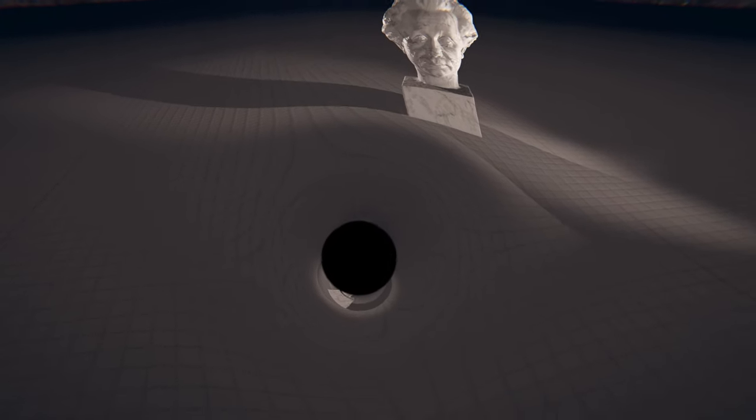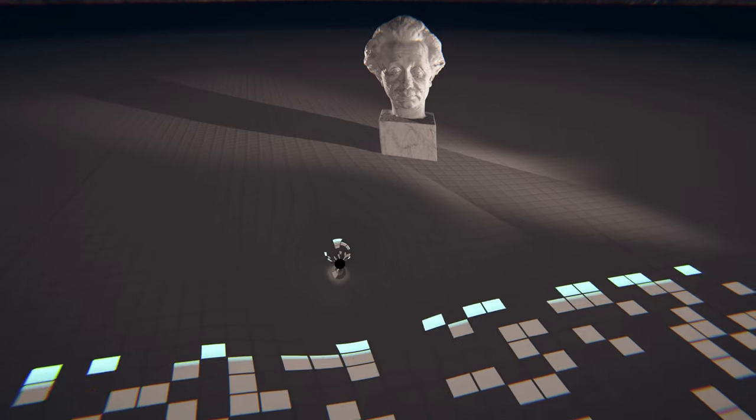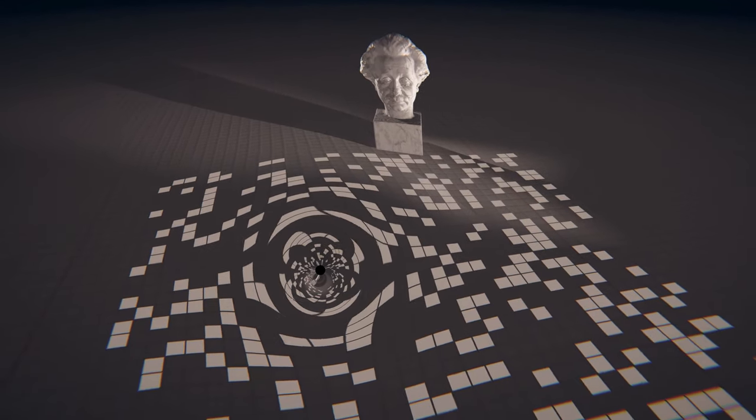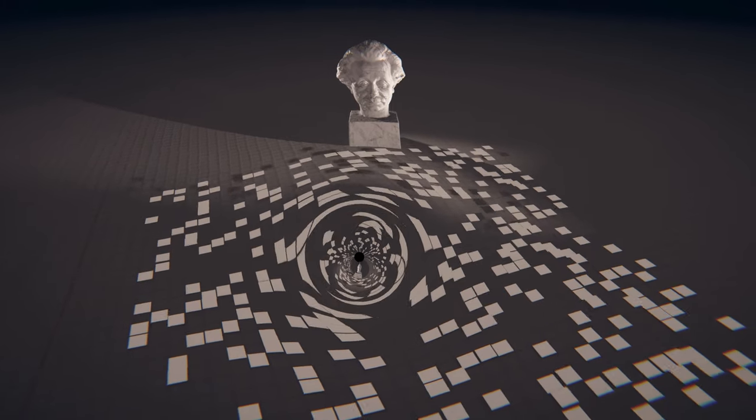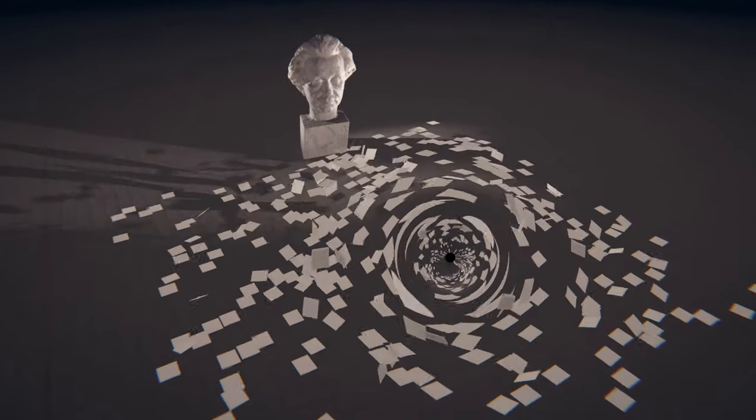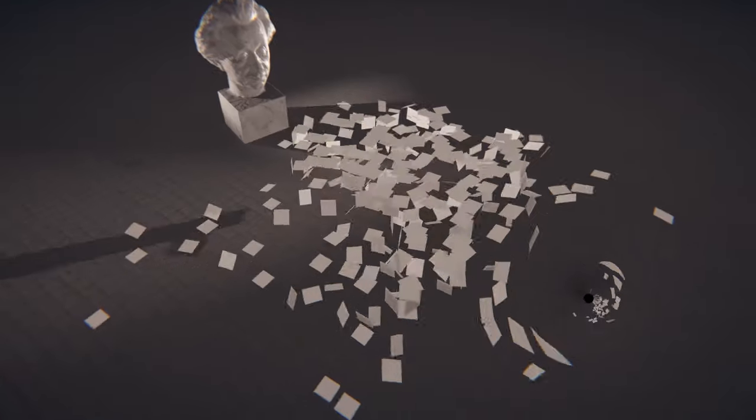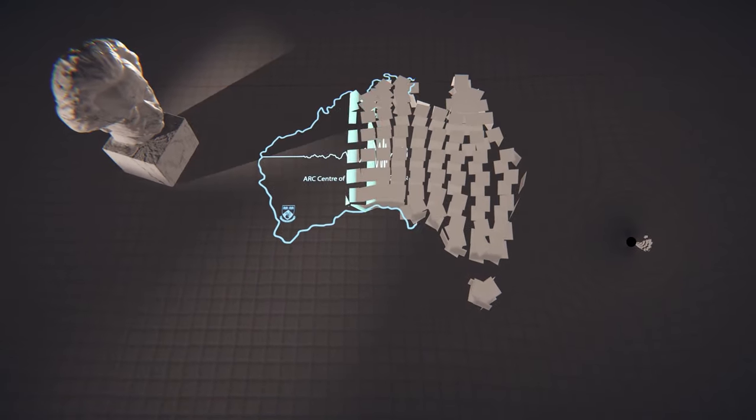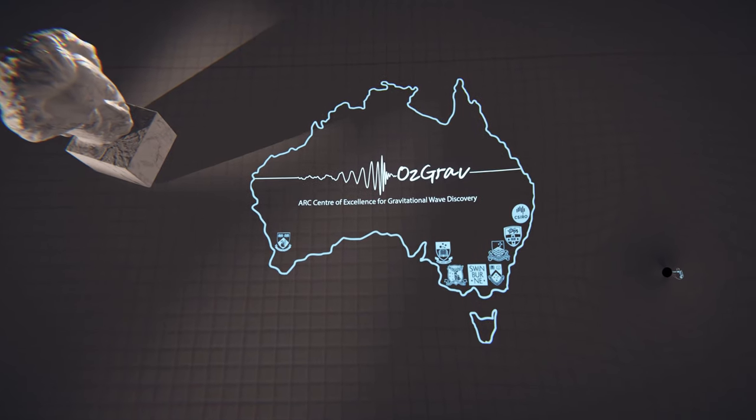Albert Einstein published his General Theory of Relativity over 100 years ago. Since then, hundreds upon thousands of scientific papers have been written. In 2016, the Australian Research Council funded some of the world's leading scientists and engineers to work collaboratively on gravitational wave research. This is AusGrav.